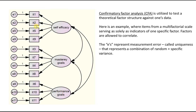This is an example of a confirmatory factor analysis in the AMOS program. Here we have three factors that are postulated, with arrows running from each factor to the measured variable boxes. If these were items in a multifactorial survey, you'd have item 1, item 2, item 5, item 9, and so forth serving as indicators of the latent variables. In this particular case, the factor structure is postulated with some items serving as indicators of self-efficacy, others as indicators of mastery goals, and others as indicators of performance goals.